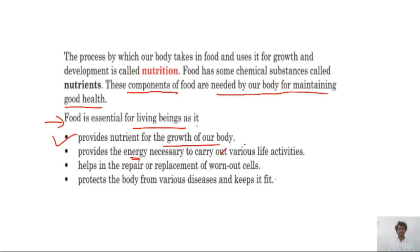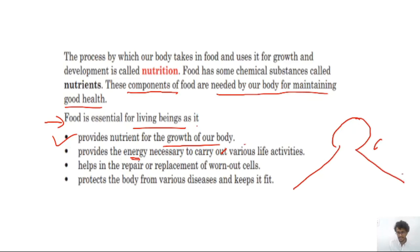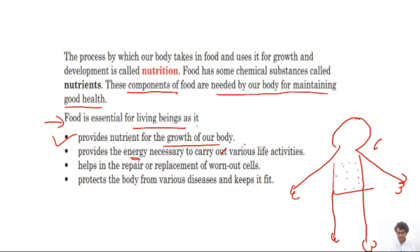Our body is made up of millions and millions of very small tiny cells. These cells actually need the nutrients that we get from food to perform various life activities. Point three: food helps in the repair or replacement of worn-out cells.